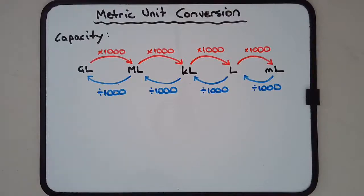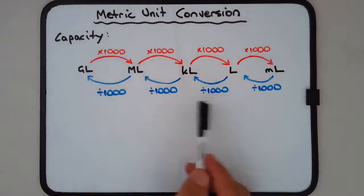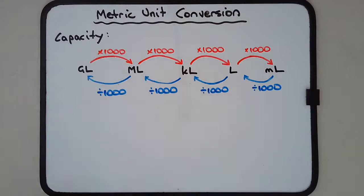The metric unit conversion for capacity follows a very similar pattern to the conversion for units of length, mass, and time. It involves either multiplication or division by a thousand.